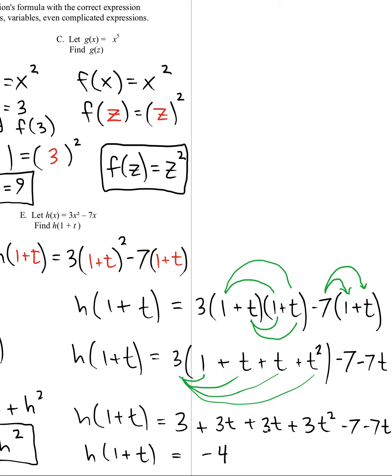I see we've got a three t, three t, and minus seven t. So that's going to be six t minus seven, which is negative t. And our three t squared can stay. And it's a good final answer.